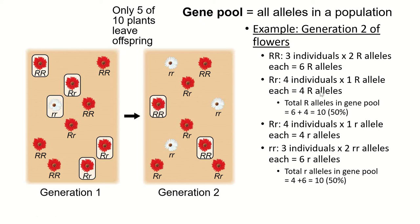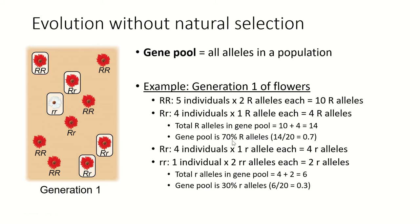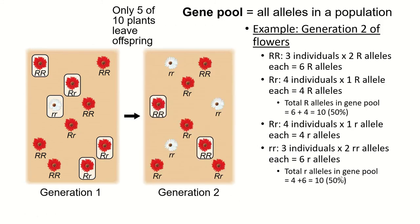Because these circled individuals reproduced, we now only have three homozygous dominant individuals and still four heterozygotes, giving us ten big R alleles. But we now have three white flowers — three homozygous recessive individuals — plus four heterozygotes, giving us ten little r alleles. Our gene pool is now 50-50 big R and little r. We've gone from 70-30 to 50-50 in just one generation.